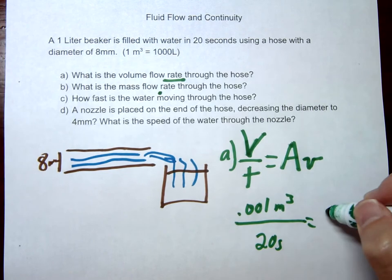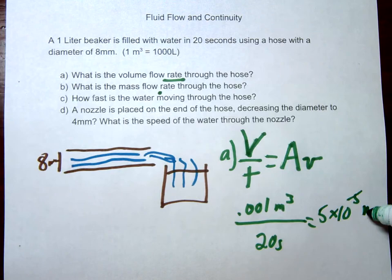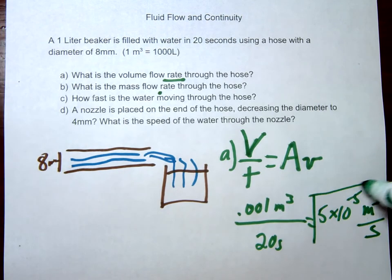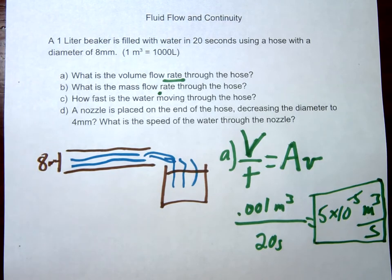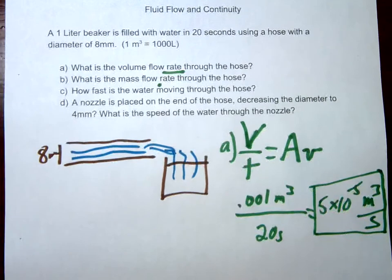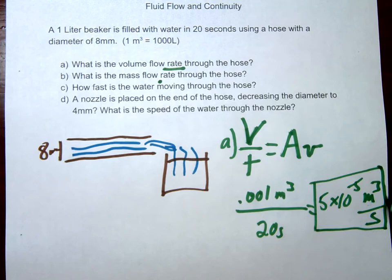So when you calculate that out, you're going to get 5 times 10 to the negative 5th meters cubed per second. So this would be our volume flow rate here and this is an important number because this is going to stay the same throughout the problem. That's what we mean by continuity, so the flow of volume per second is going to stay the same throughout.